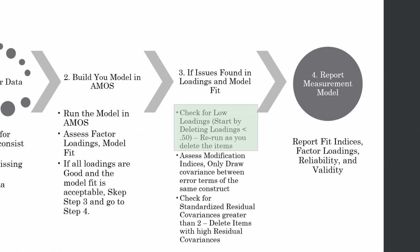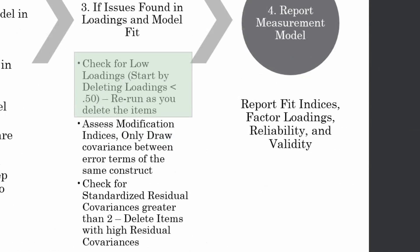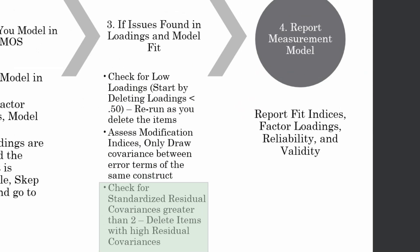Look for low loadings. Stepwise delete your loadings and keep rerunning your model. It's just like trial and error. Assess the modification indices and only draw covariances between error terms of the same construct. Check for standardized residual covariances that are greater than 2. Delete items with high residual covariances. And finally, you report your model.